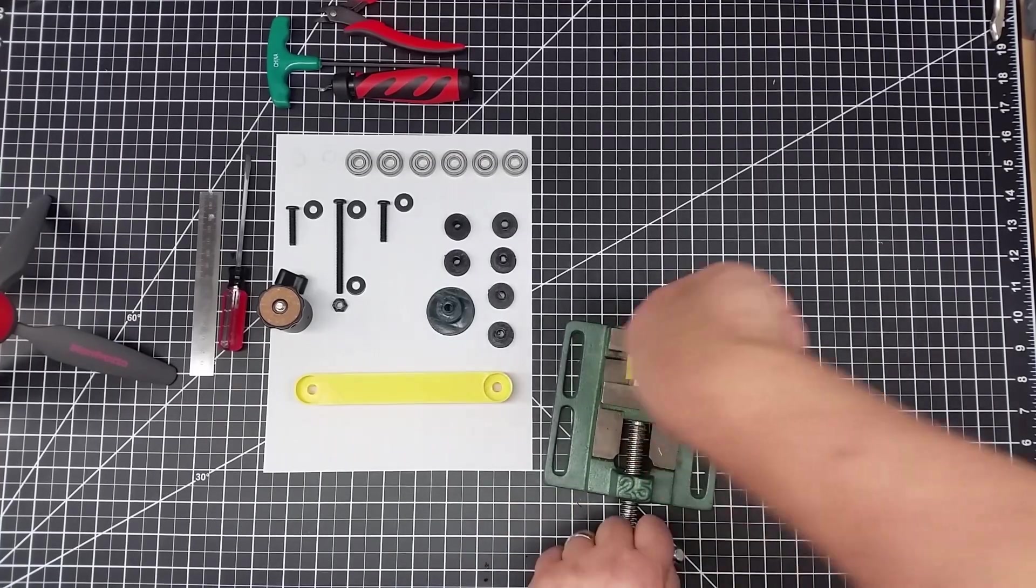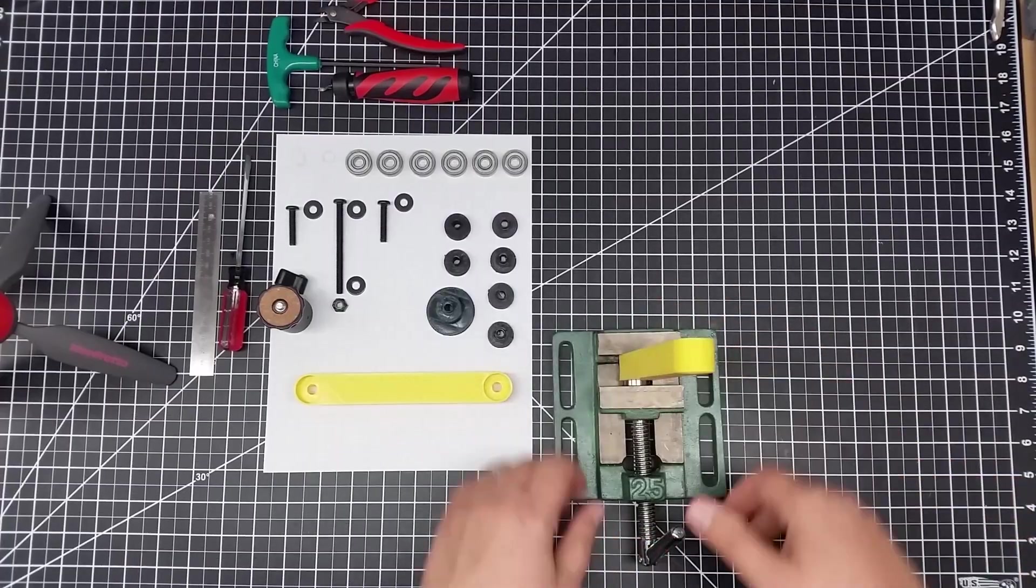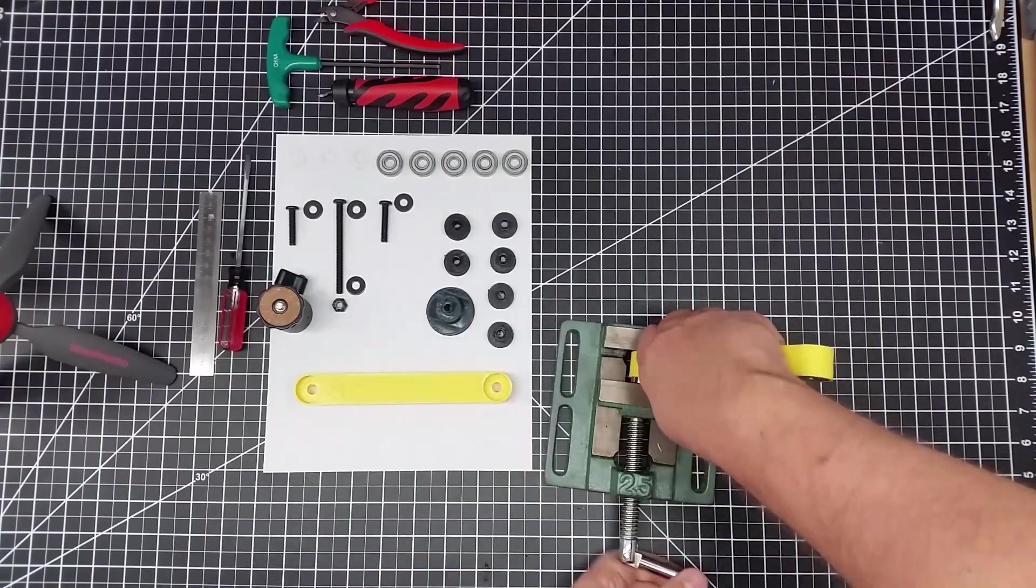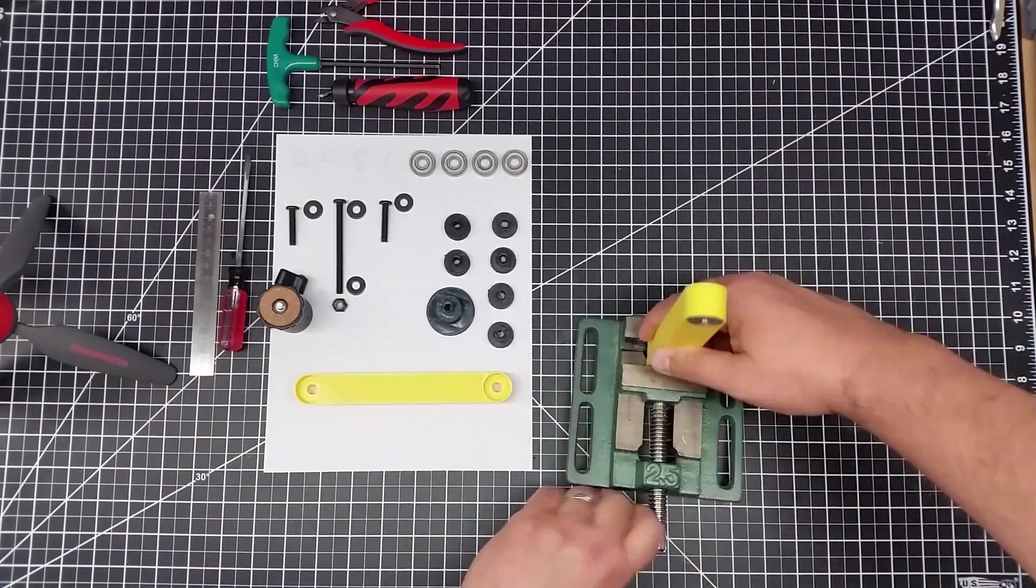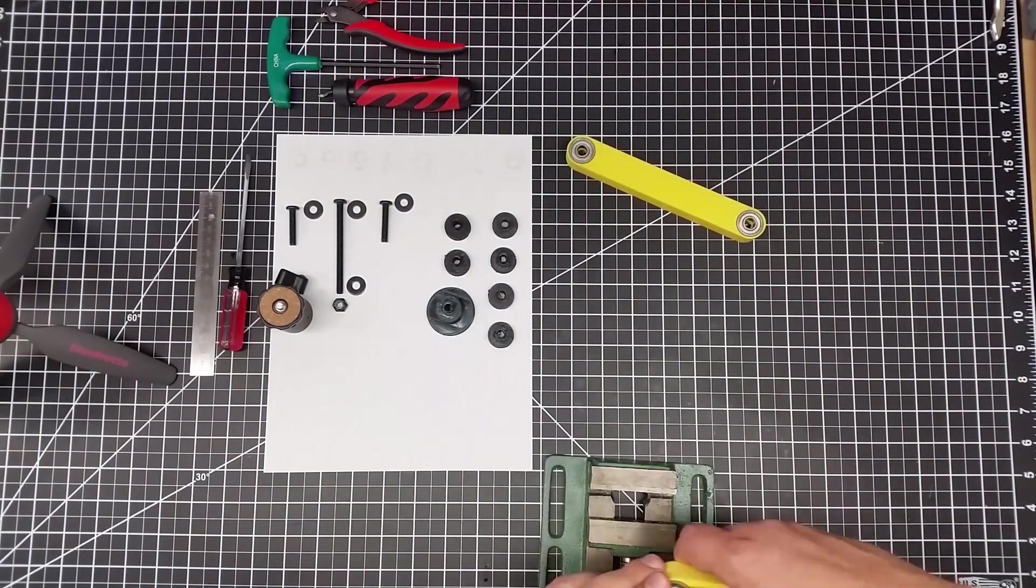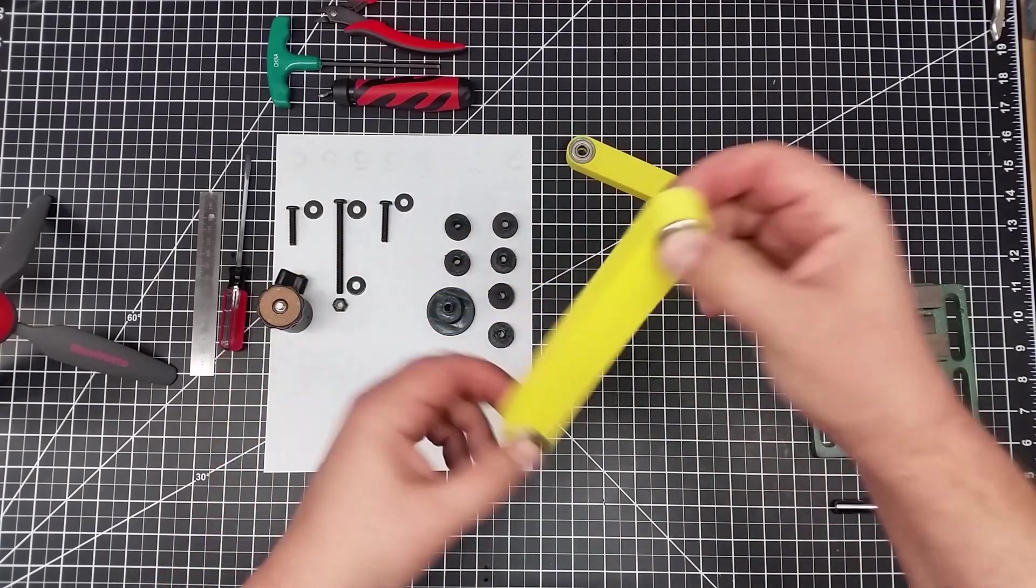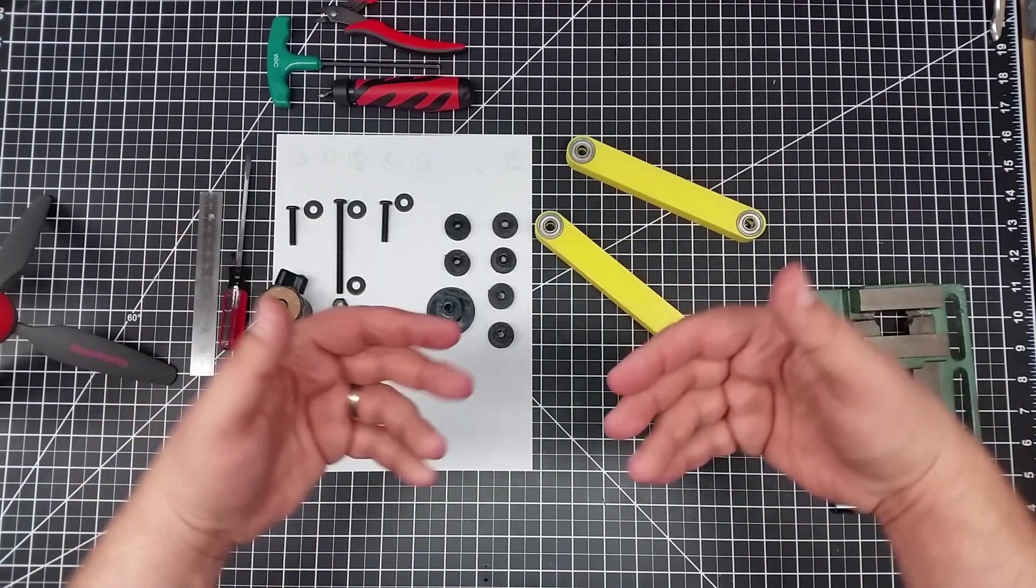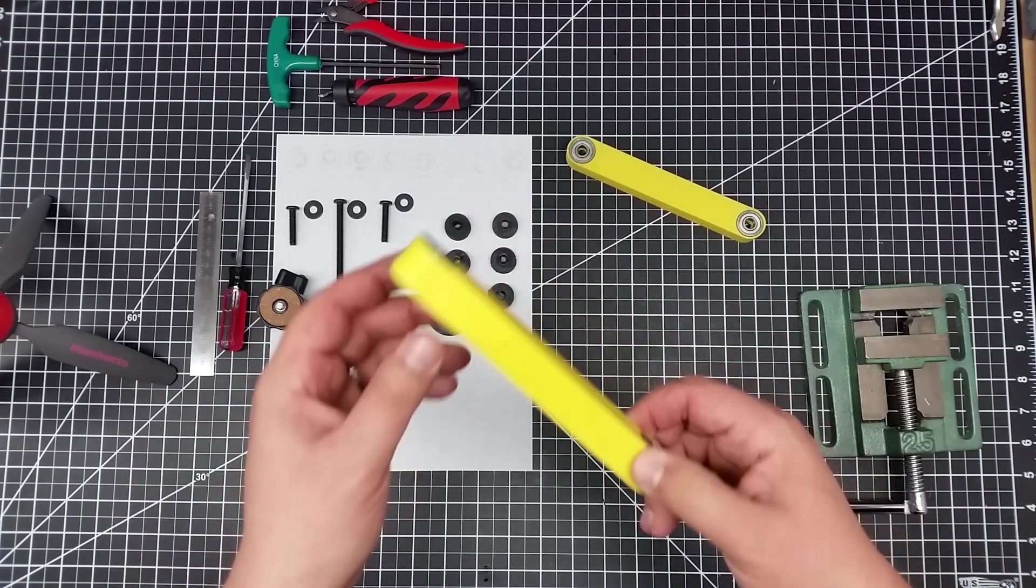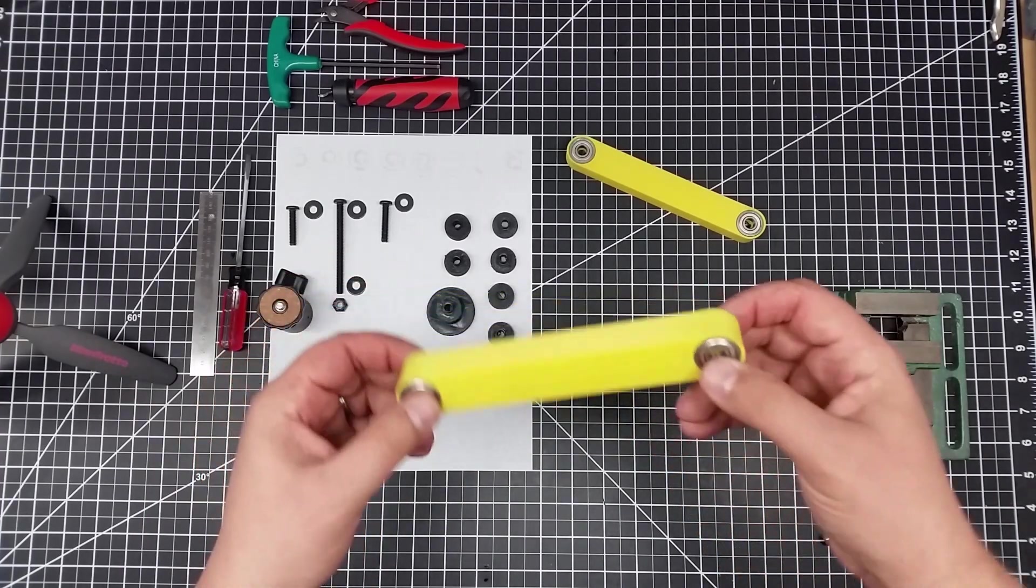So since you guys get the basic idea, what I'm going to do is from here speed it up until we complete the arms. Okay, so we're back. We've got all eight bearings pressed in. And sorry, I had to move the vise back a little bit in some of that time lapse. Because it's just easier if this end could spin past the edge of the table.